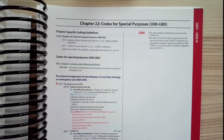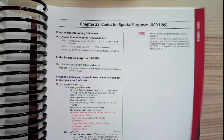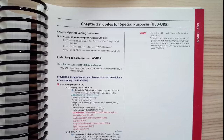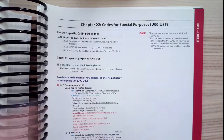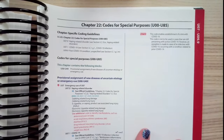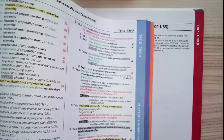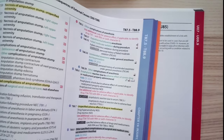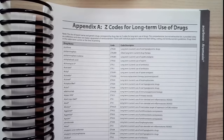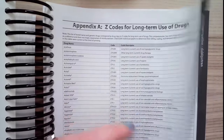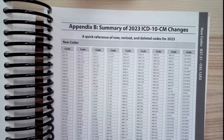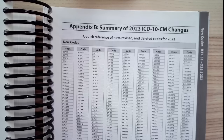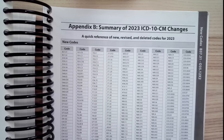Chapter 22 trips some people up — they think their book is malfunctioning because it's just a tiny little page and they miss it, since it's a fairly new chapter. It's not in alphabetical order. These are the U codes, and people think they come right after the T codes, but because they're organized by chapter and not alphabetically, chapter 22 comes after chapter 21. There are also a few appendices: Appendix A covers Z codes for long-term use of drugs, and Appendix B is a summary of the 2023 ICD-10-CM code changes — new, revised, or deleted codes from the prior year.